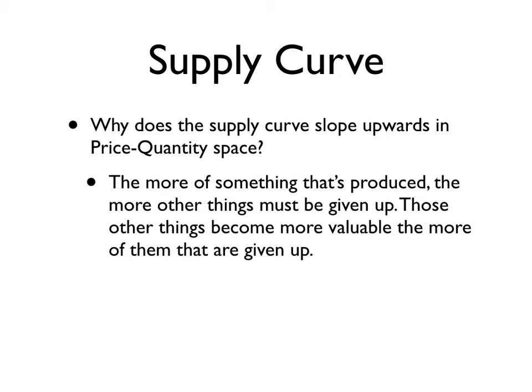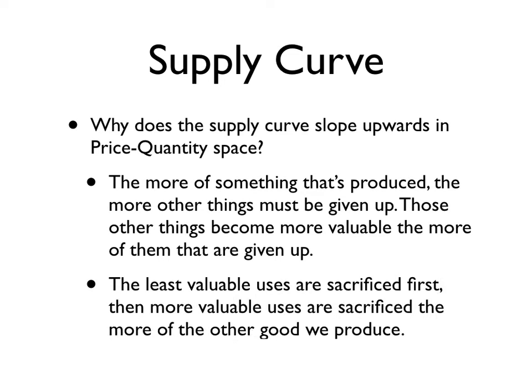Those first things are not that valuable to us relative to the things we give up later on. The least valuable things that we have or uses for rubber are sacrificed first, and then more valuable uses as we produce more tires.